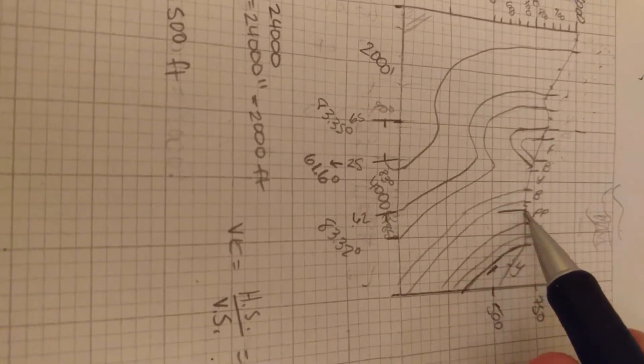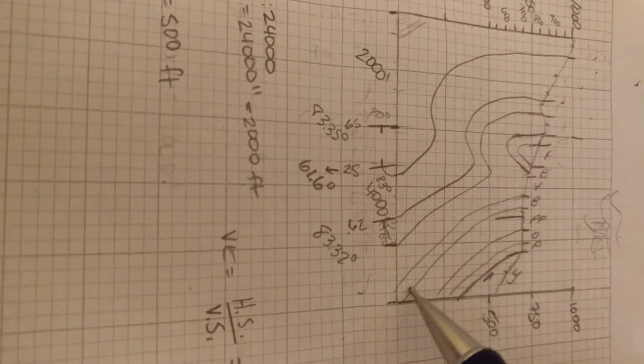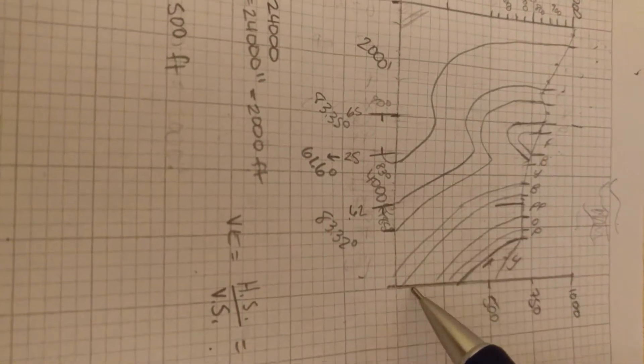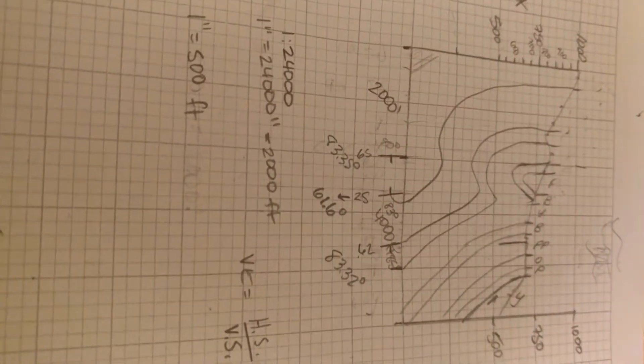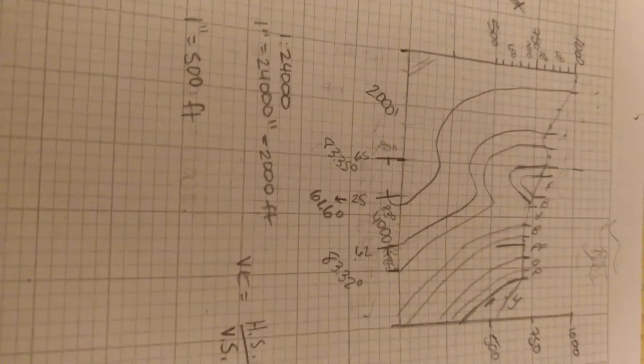And we said that if we don't have any strike and dip information for a bed right next to a bed where we do, then they probably are going to follow each other and be parallel. All right. Good luck.